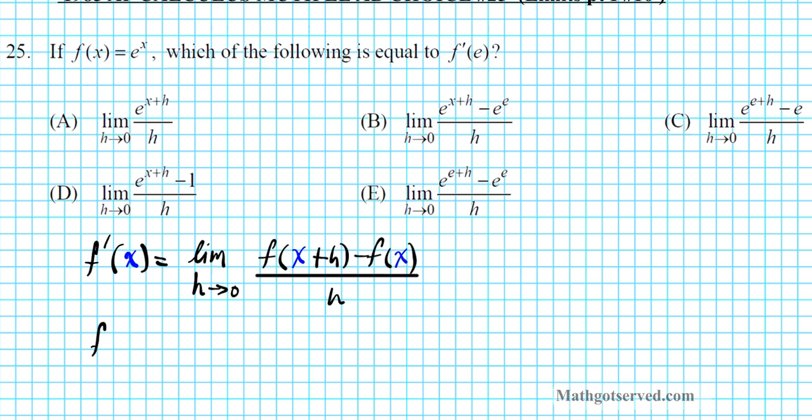So f prime of e is going to be written as the limit as h approaches 0 of f of, instead of x plus h, we'll have e plus h, minus f of, instead of x, we'll have f of e, and then the whole thing divided by h. The entire numerator expression divided by h.